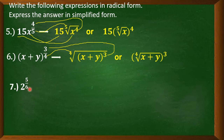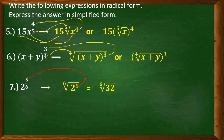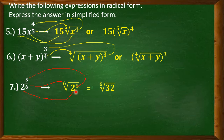Example: 2 to the power of 5 over 6. So 2 is the radicand, 5 is the exponent of the base, and 6 is the index. We can simplify this further because the instruction asks for simplified form. 2 to the power of 5 means 2 times 2 times 2 times 2 times 2, which equals 32. So our final answer is the 6th root of 32.